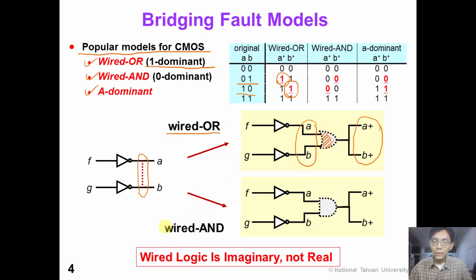Similarly, we can also model this as a wire-AND model. In this case, we insert an imaginary wire-AND logic gate. So the output A+ and B+ would be 0 if the original input is 0 and 1, or 0 if the original input is 1 and 0. This is why the wire-AND model is also called the zero-dominant fault model.